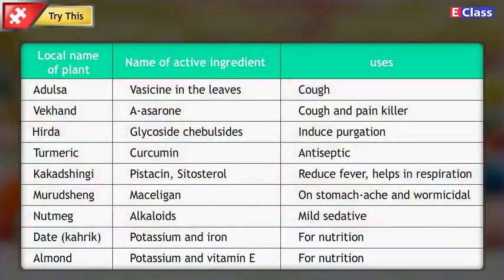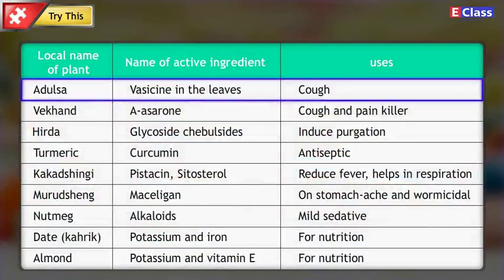Answer. Local name of plant: Adulsa. Name of active ingredient: Vasecin, found in the leaves. Uses: Cough.